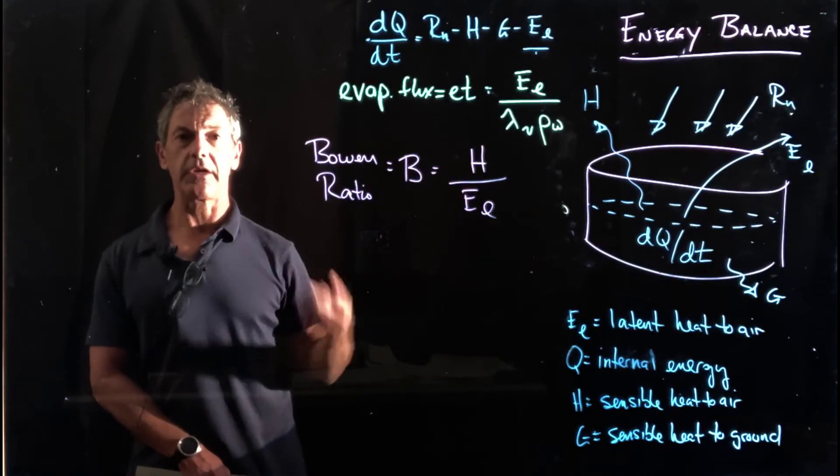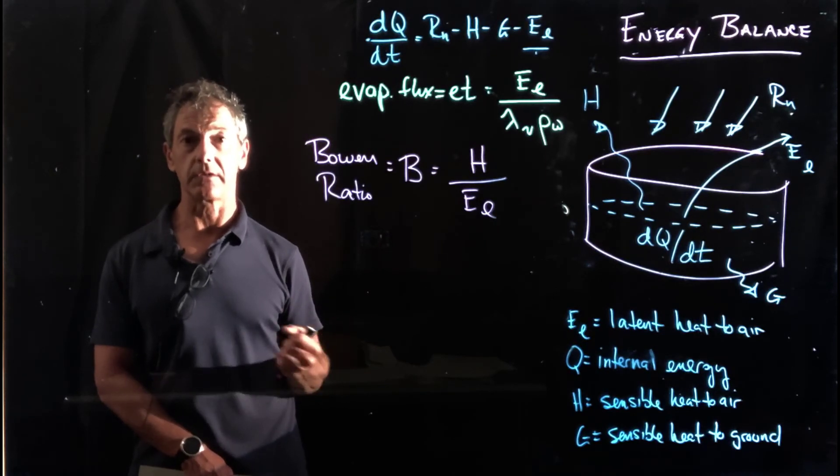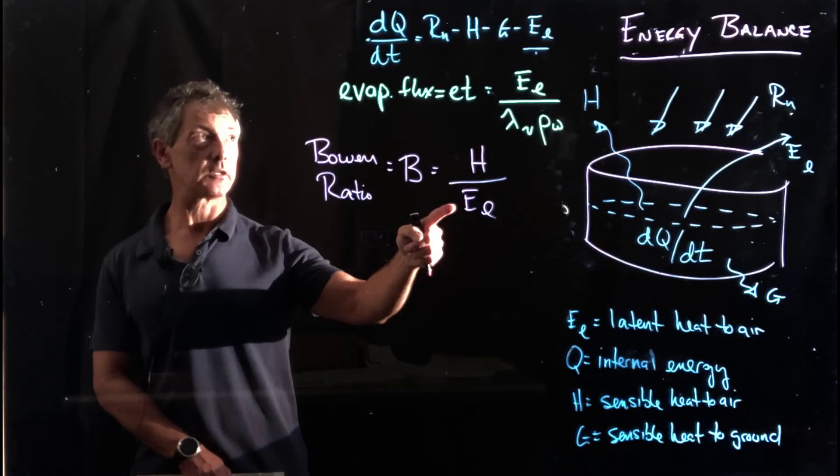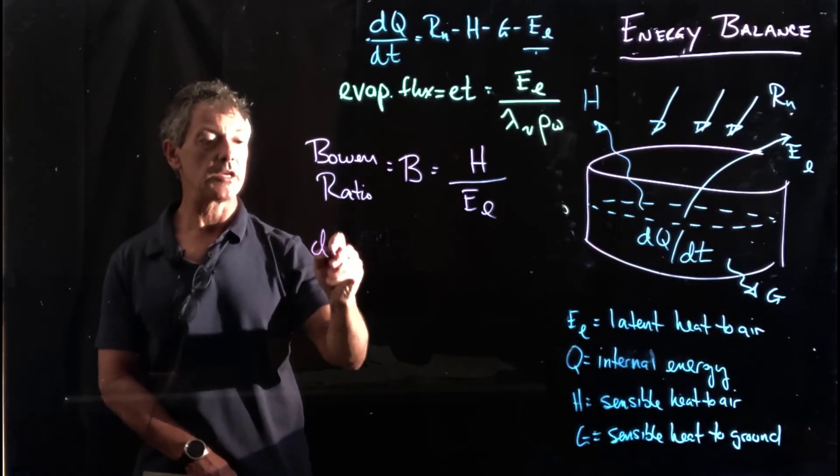And when it's a very dry but windless day and then most of the energy is going to converting liquid to vapor water, we're going to have a very small Bowen Ratio. So I can substitute that into our radiation balance.